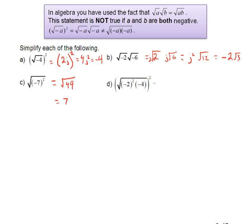And in the final one here, order of operations first, so we're going to leave the square root, we're going to leave the squared, we're going to work inside. So negative 2 squared is 4, times negative 4 is negative 16.